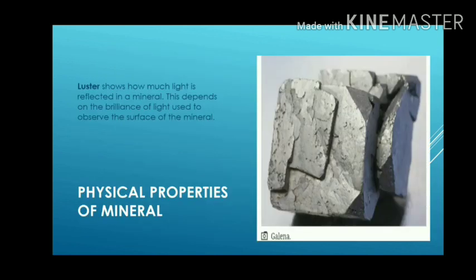Luster shows how much light is reflected in a mineral. This depends on the brilliance of light used to observe the surface of the mineral. Luster is an optical property of minerals observed in terms of reflection from the mineral's surface. There are two main types of luster: metallic and non-metallic. The intensity of luster depends on the amount of light reflected from the surface, which is generally related to the refractive index of the mineral.